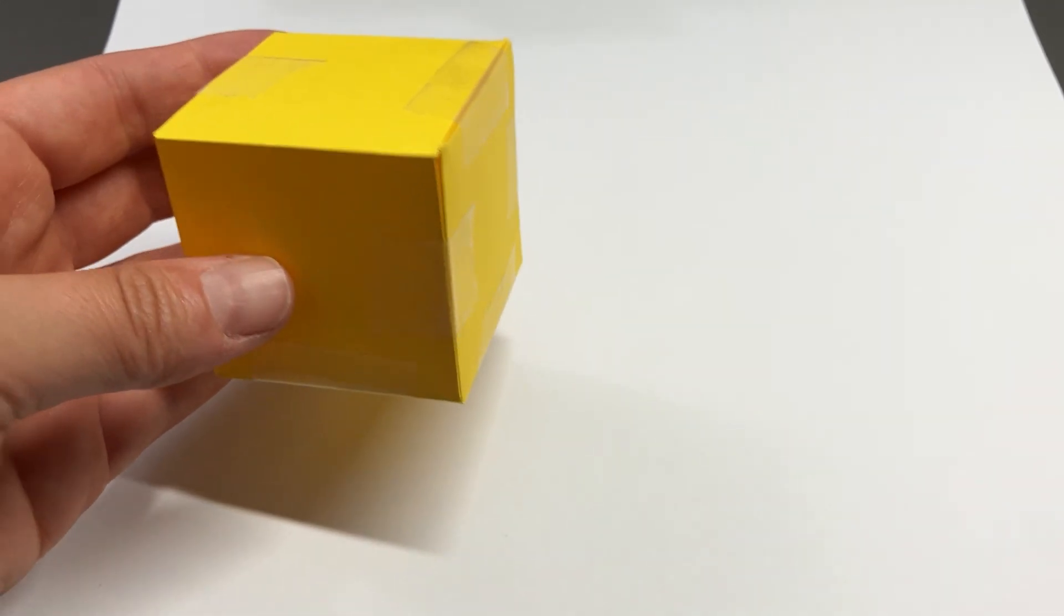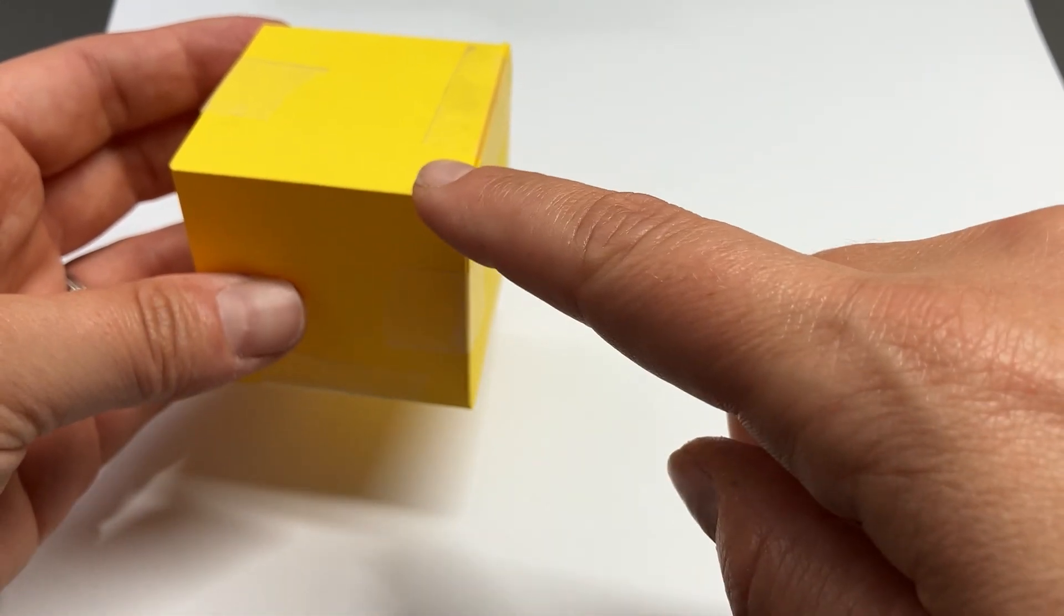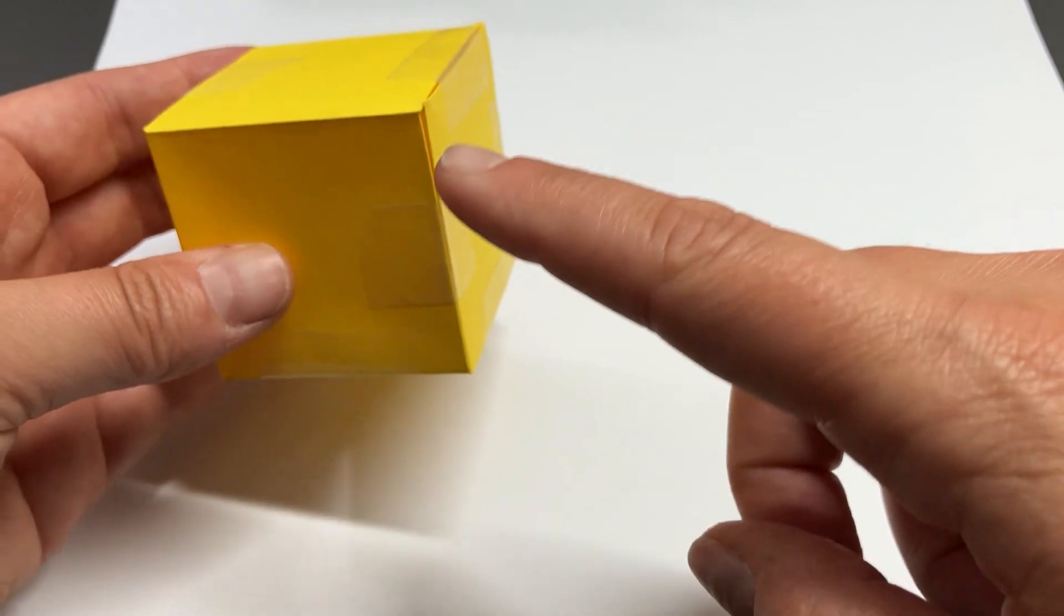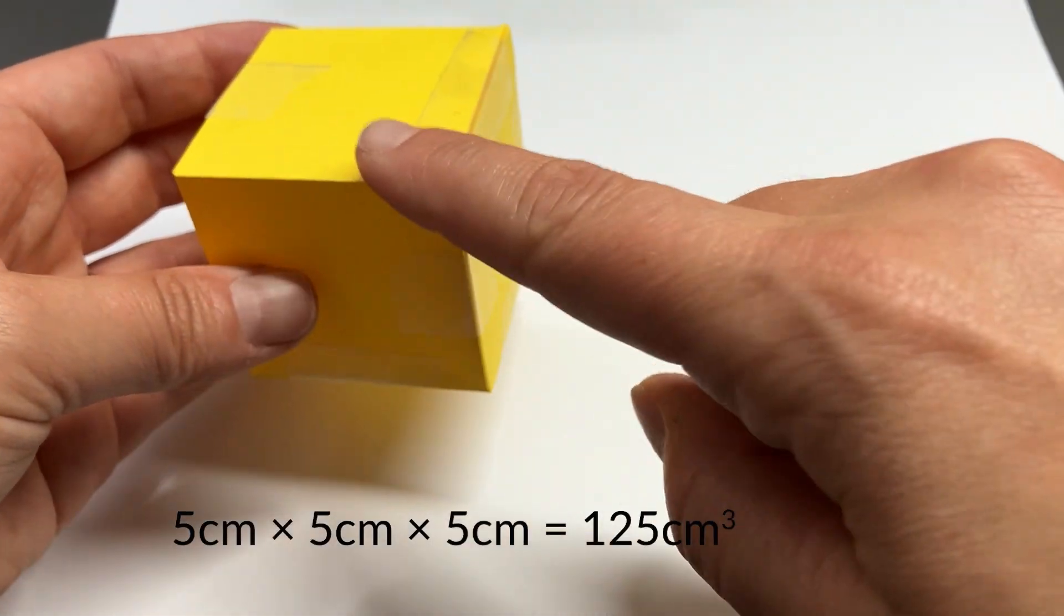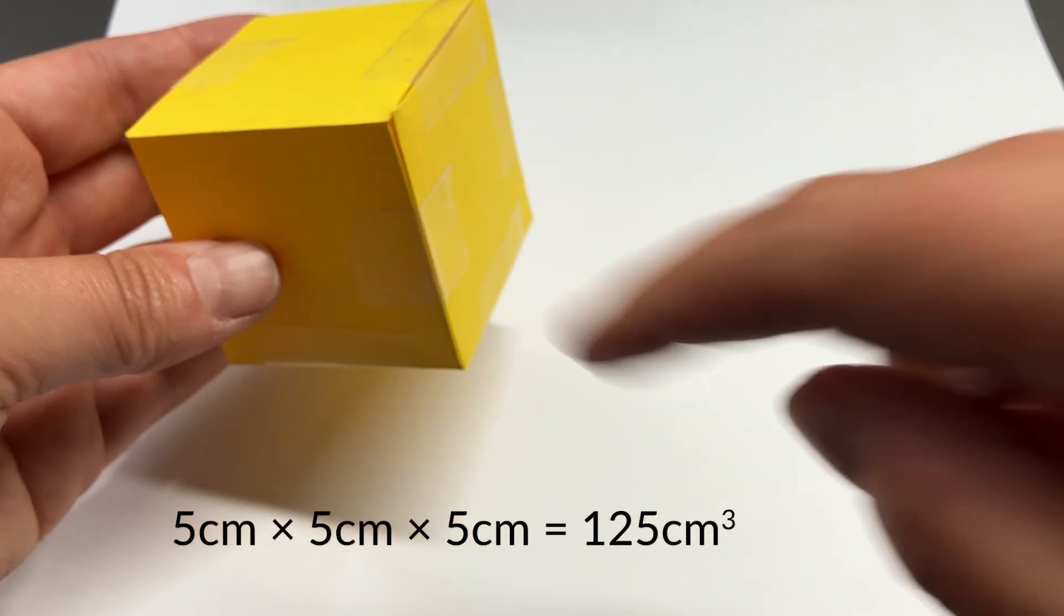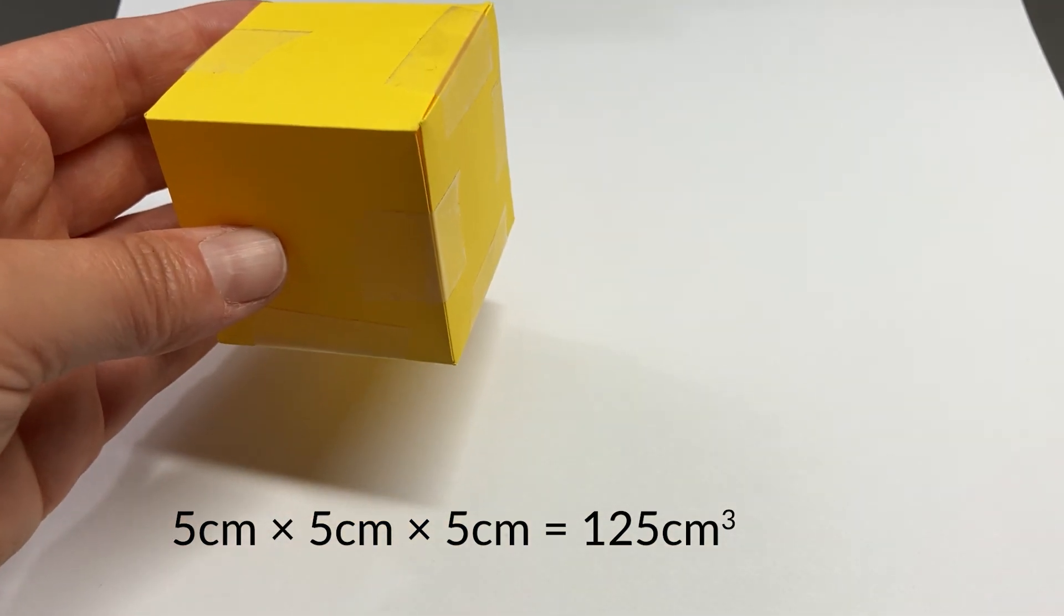For example, if the length of the cube is 5 and all sides are the same, then to find the volume I would do 5 times 5 times 5 equals 125 centimeters cubed.